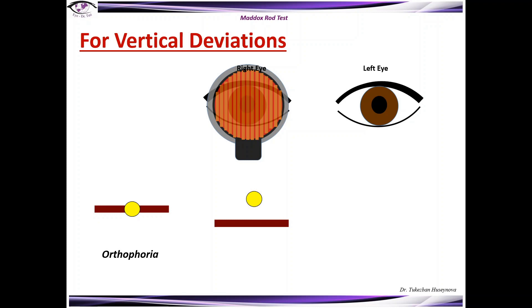In case if the patient sees the light above the red line this is the right hyperdeviation in relation to the left eye.